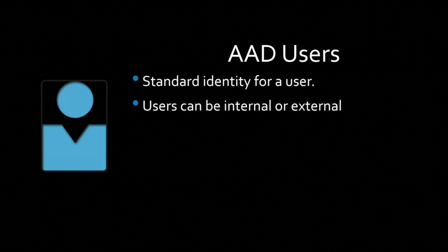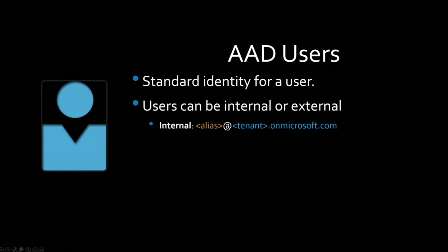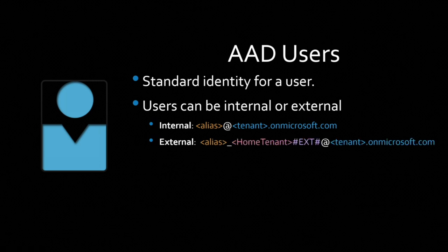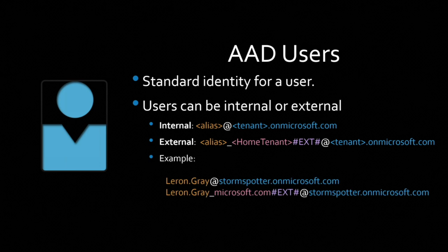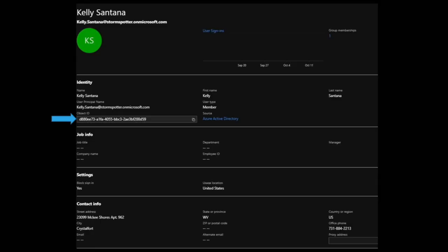Users are the standard identity. They can be internal or external. An internal syntax would be something like alias@tenant.onmicrosoft.com, and an external would be alias_theirhometenant#EXT#@tenant.onmicrosoft.com. For example, leron.gray@stormspotter.onmicrosoft.com, or leron.gray_microsoft.com#EXT#@stormspotter.onmicrosoft.com. You can tell very quickly whether someone is native to that AAD instance or a guest user. Each object in Azure Active Directory has an object ID, which is how the object is represented within AAD.